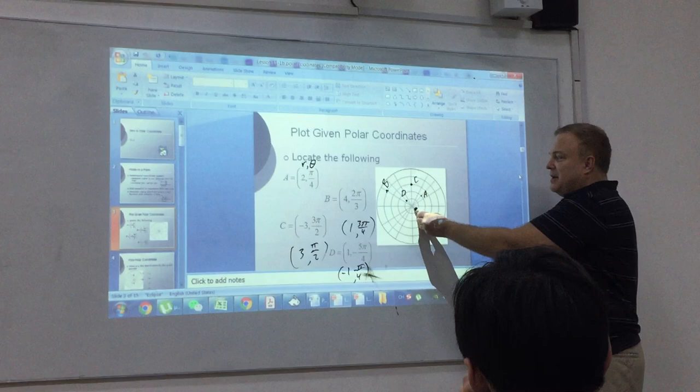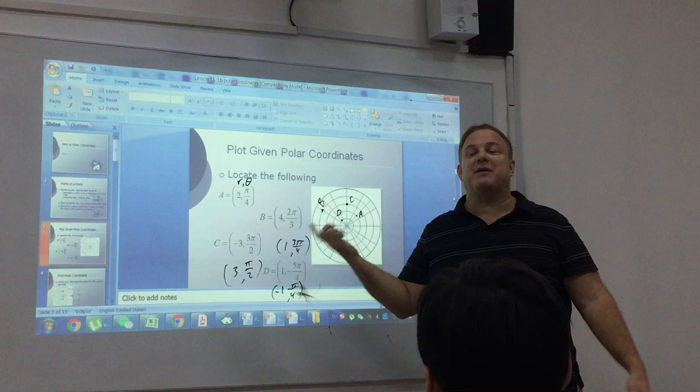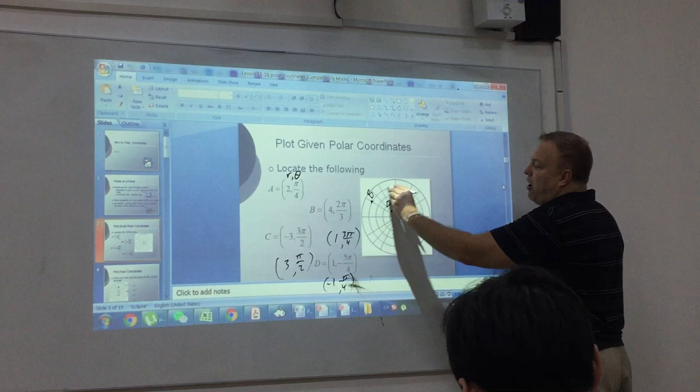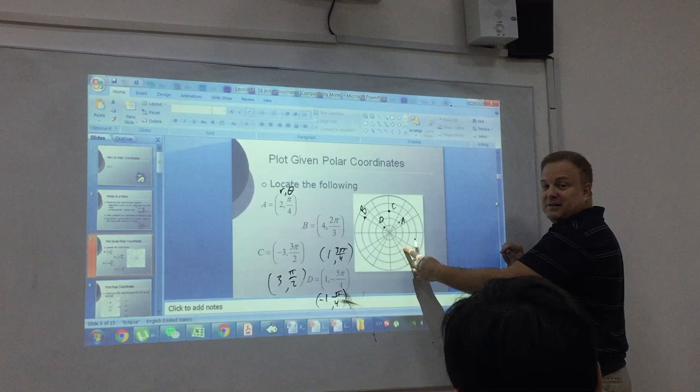Sure. As a matter of fact, this same angle, negative pi over 4, if I wanted to choose an angle between 0 and 2 pi, and most of the time that's what we want, if I go all the way around to here, what angle would that be?